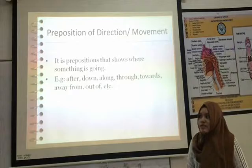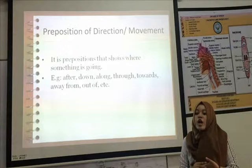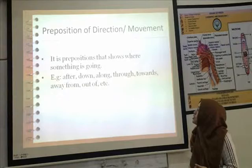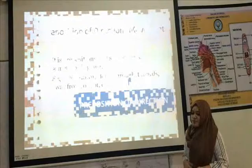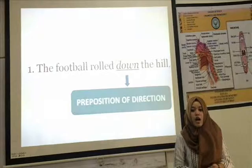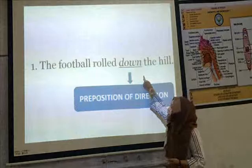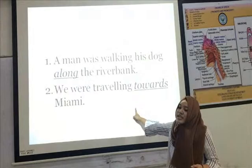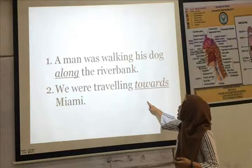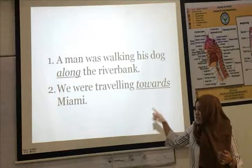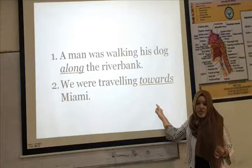The last kind of preposition is preposition of direction or movement. Preposition of direction or movement is a preposition that shows where something is going. For example: after, down, along, through, towards, away from, out, out of. Example sentence: the football was kicked down the field. 'Down' is a preposition of direction. Other examples: a man was walking his dog along the river bank. 'Along' is a preposition of movement. A ship sailed towards Miami. 'Towards' is a preposition of movement.